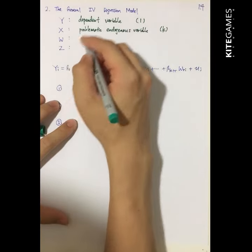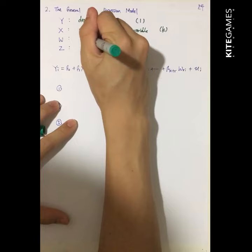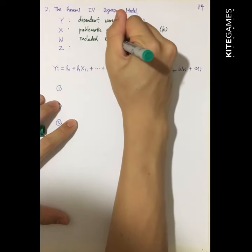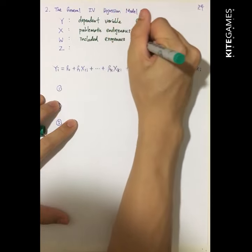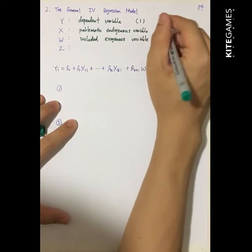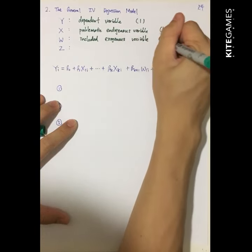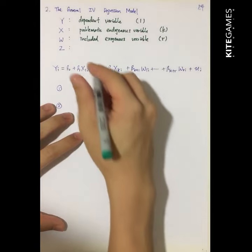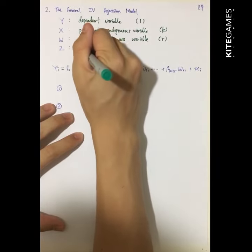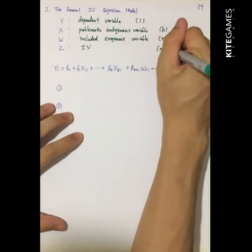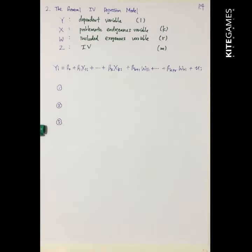While w is some included exogenous variable, and there are r numbers of them. Finally, z is the instrumental variables, and there are m instrumental variables.